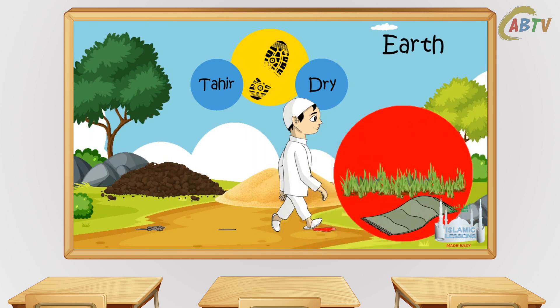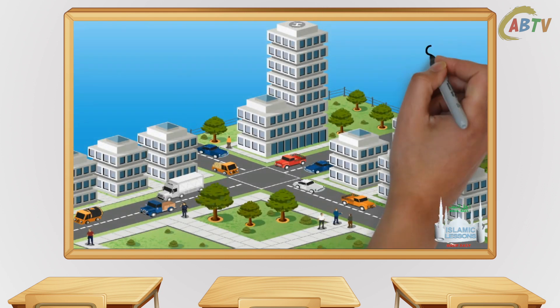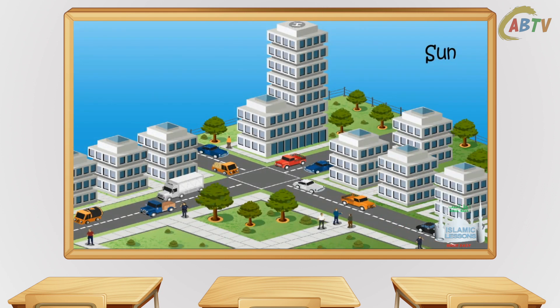Note: walking on a carpet, rug or grass, the shoe will not become tahir. Also, earth does not purify other parts of our body or clothes. The sun can purify the earth, buildings and walls provided that they are wet and the najasa is gone and nothing prevents the sun from shining on it.